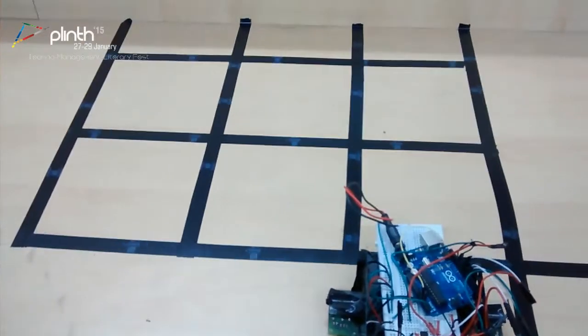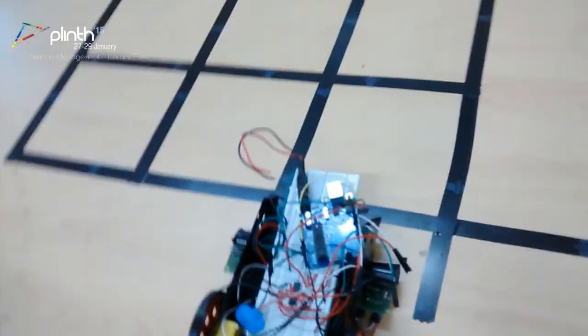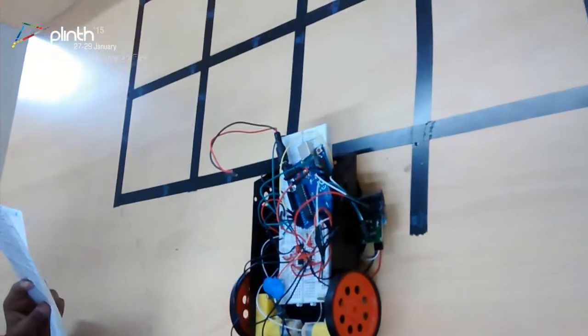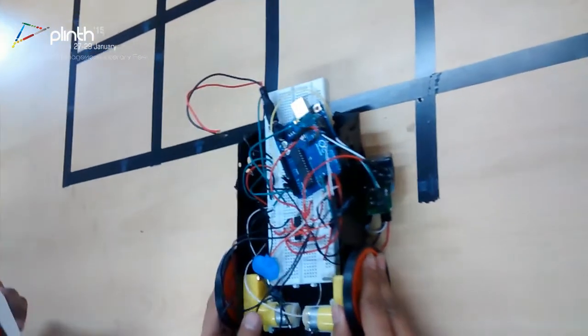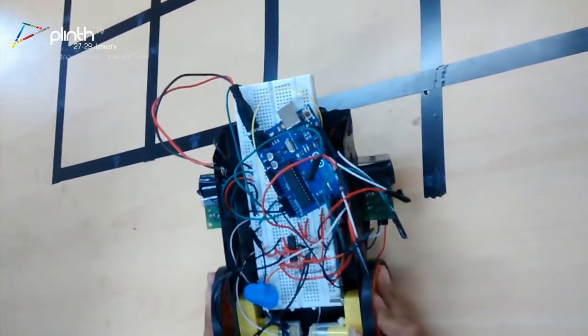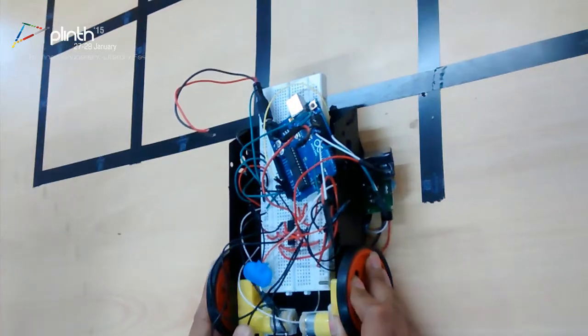Welcome to the tutorial for the grid solver event Flint 15. This is our grid solver robot built on a microcontroller board, Arduino. It is a line follower robot.